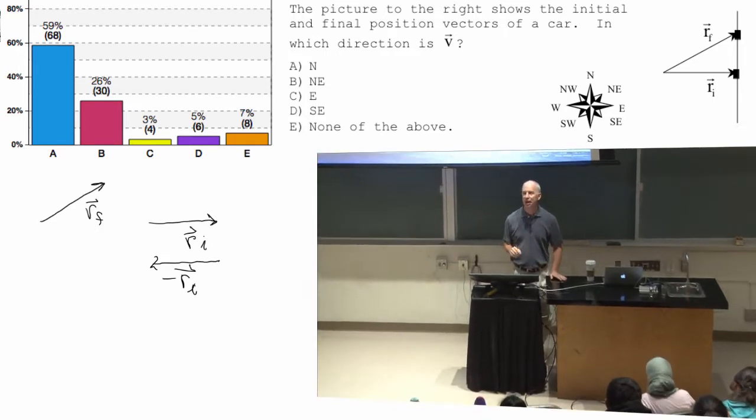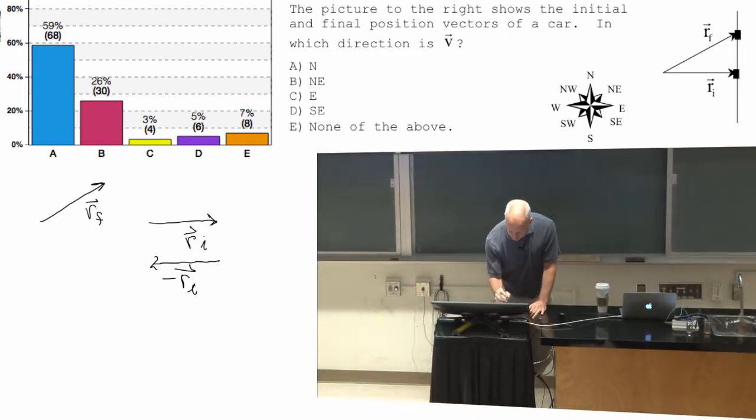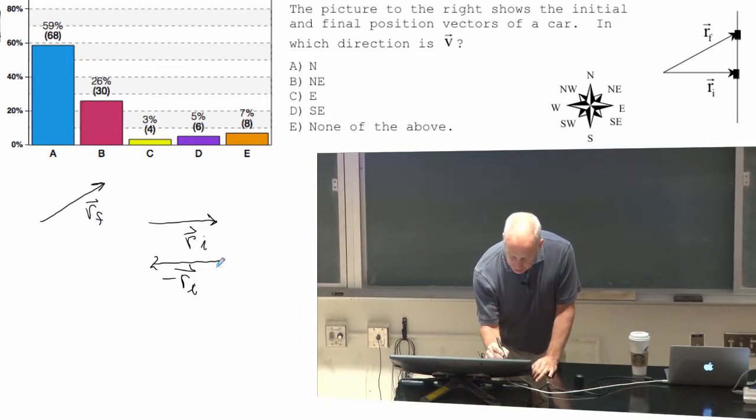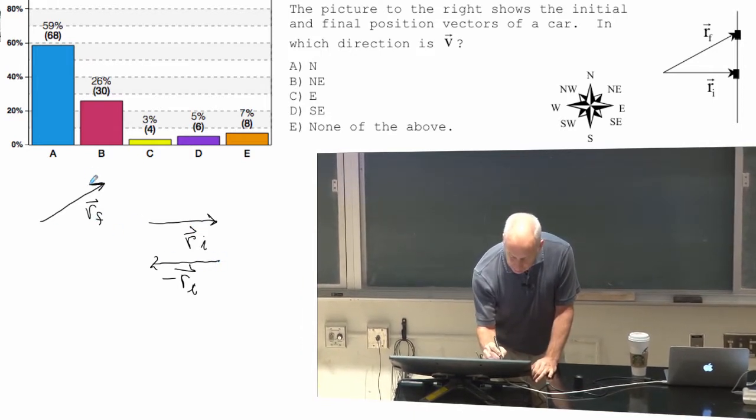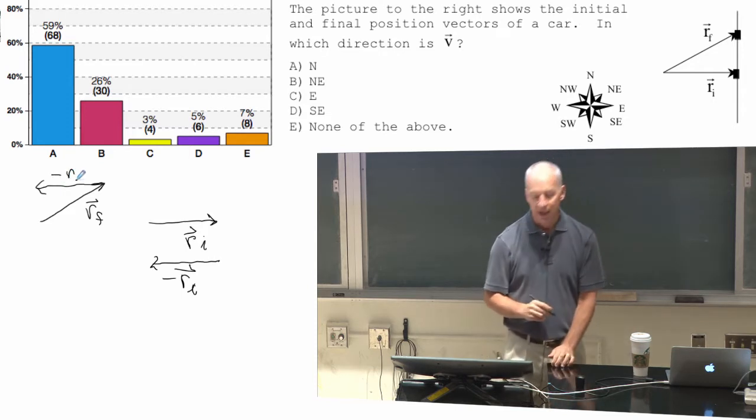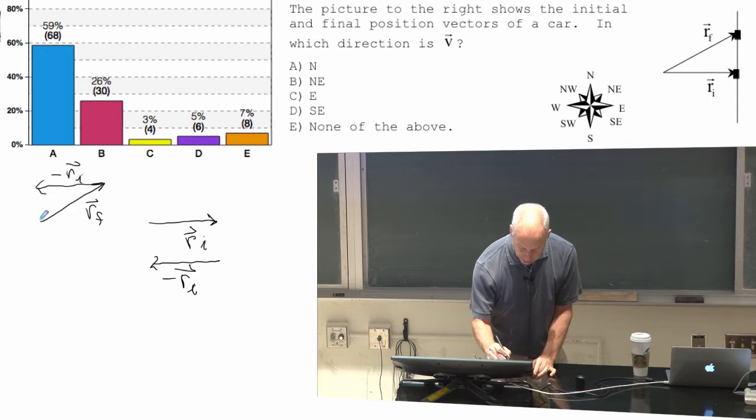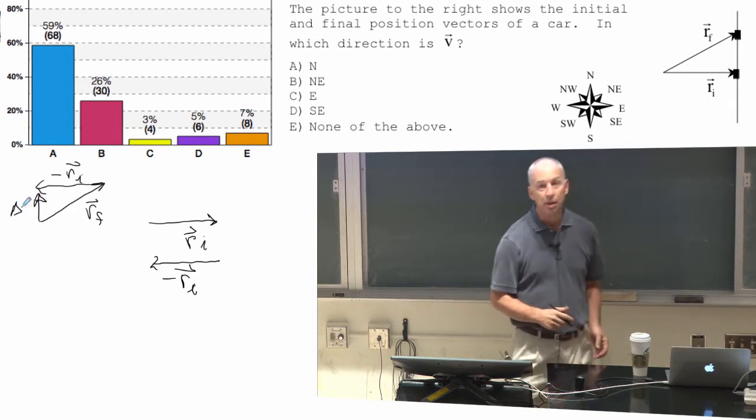One is just take the directions, as I said. Take R final, add negative R initial. And what you would find out is that delta R is pointing north.